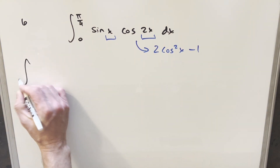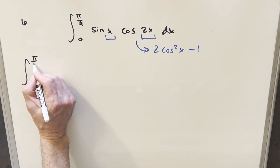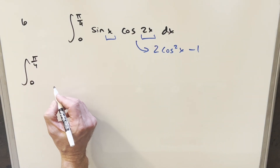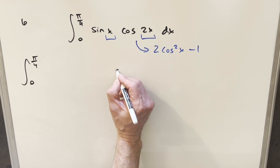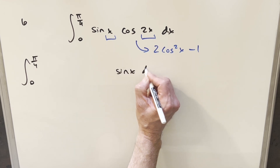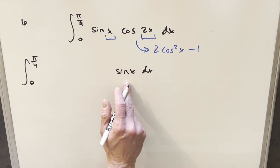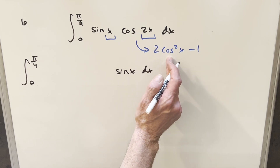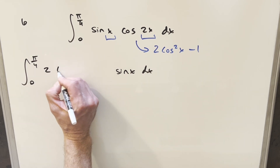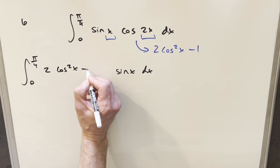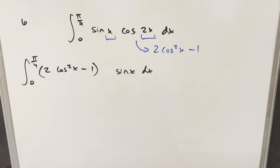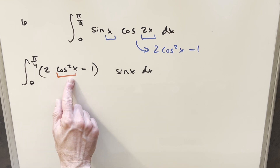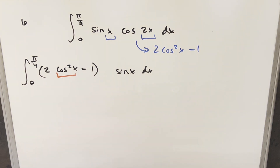I'll just rewrite our integral with this value plugged in, keeping our bounds. I'm going to move the sin(x) to the end to set up a u-substitution, plugging in 2cos²x - 1 for cos(2x). I do it this way because I want to substitute for cosine, since the derivative of cosine is minus sin(x).